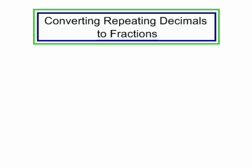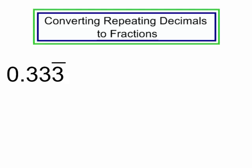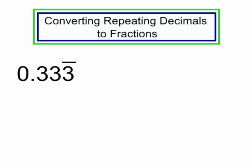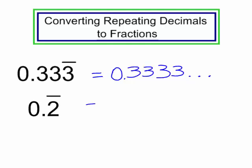We are going to work on converting repeating decimals to fractions. Let's make sure we understand repeating decimals. 0.333 with a bar above the 3 means that 3 just keeps going and going. The 3 is repeating and it goes on and on and on — this number is a repeating decimal.